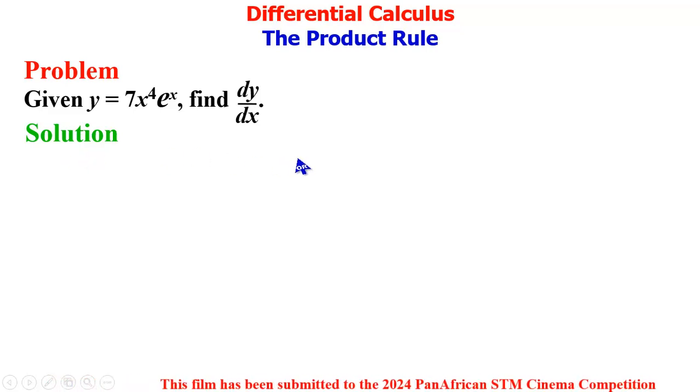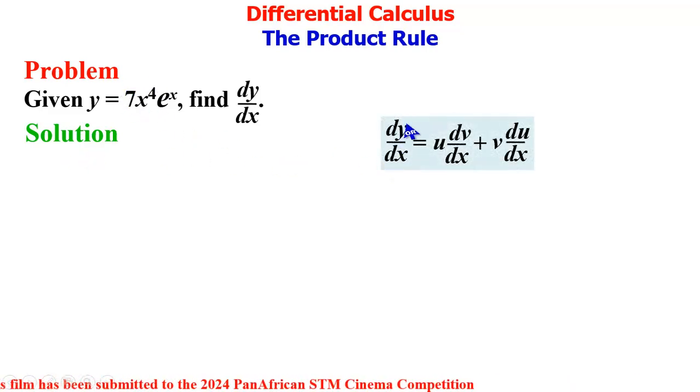In our solution to this problem, since this is a product of two functions, we bring in the product rule, where we make one of the functions u and the other function v.